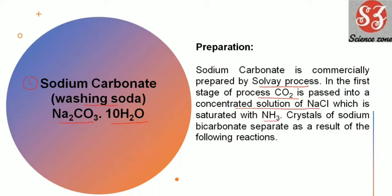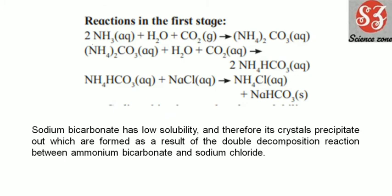In the Solvay process, you start with a concentrated solution of NaCl — that is, a brine solution which is already saturated with NaCl. This concentrated NaCl solution is then passed through CO₂ gas. The aqueous solution is first saturated with ammonia, and then CO₂ gas is passed through it, forming ammonium bicarbonate.